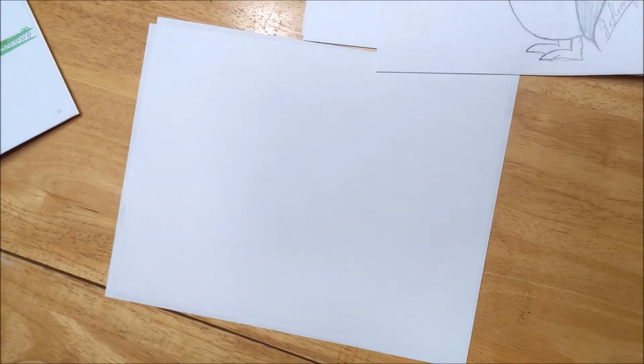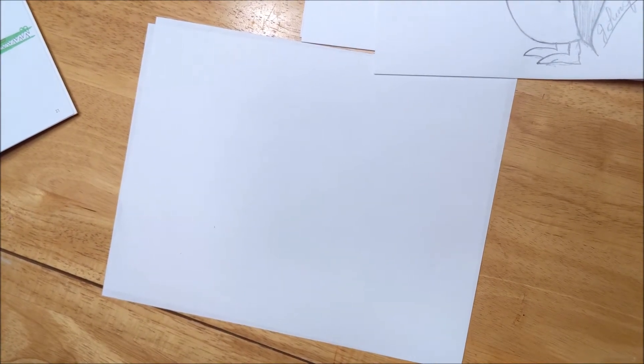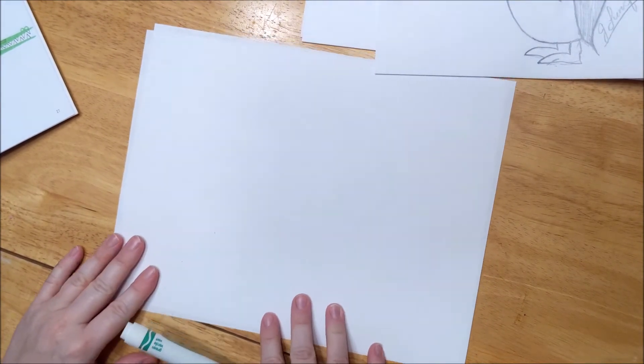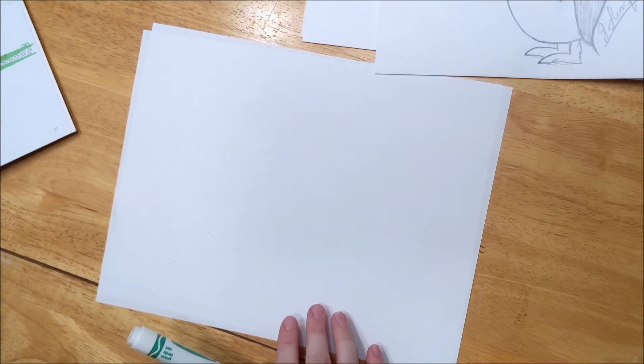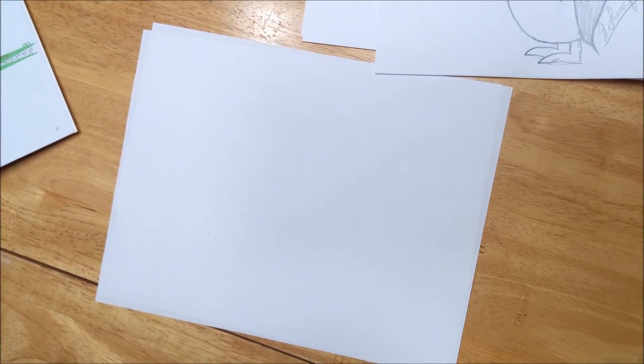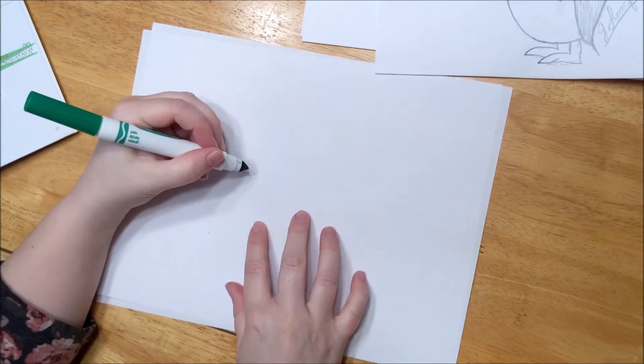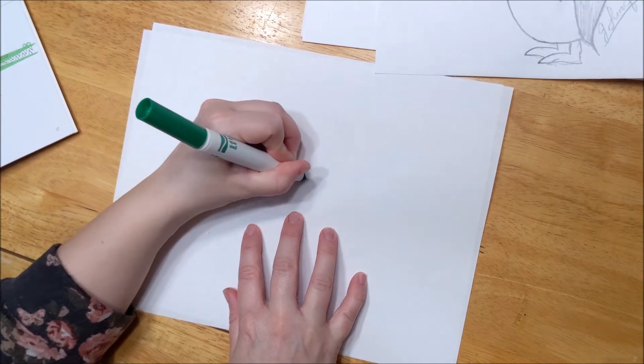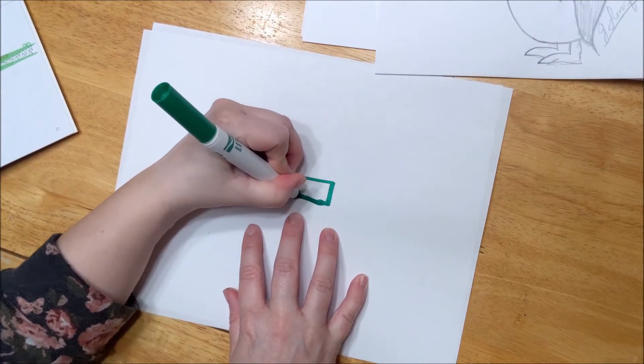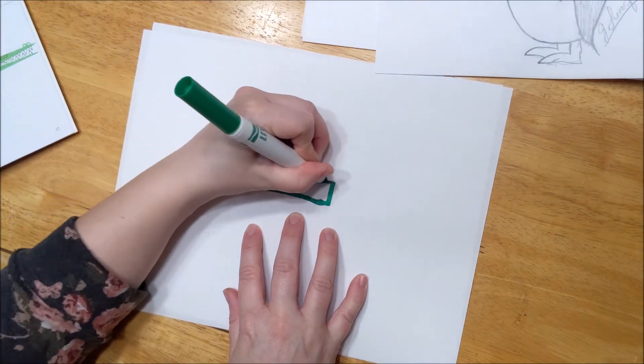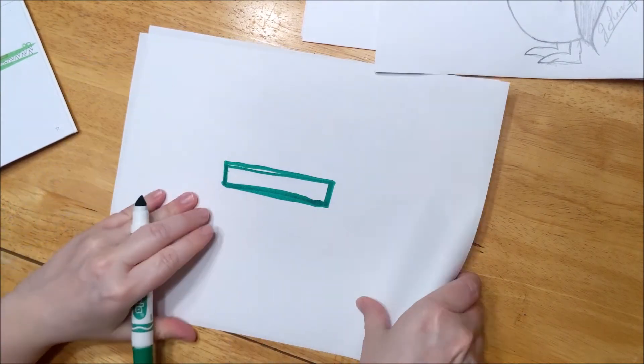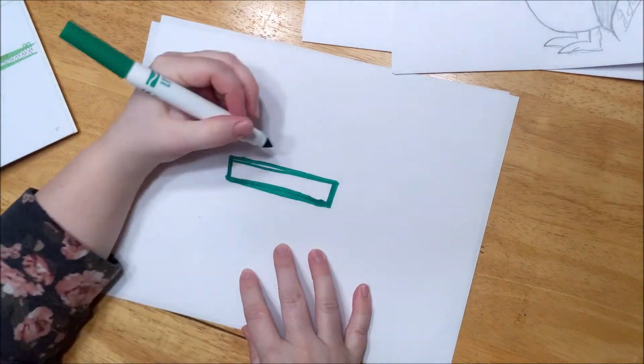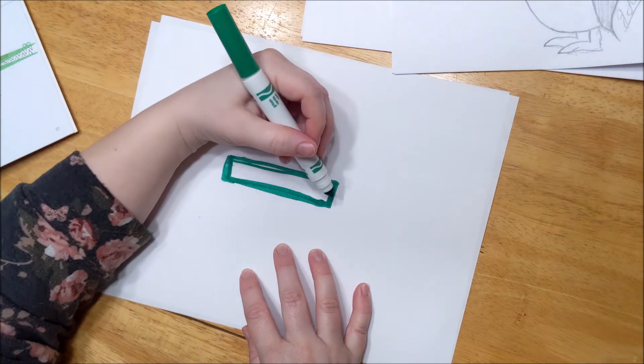We're going to make an alligator today. Just follow along, guys. You can use color if you have them or whatever you have. First thing I'm going to do is do a rectangle in the middle of the paper like this. And then you're going to color it in.